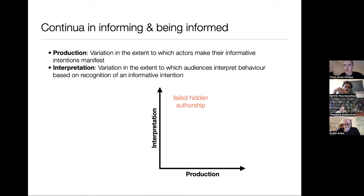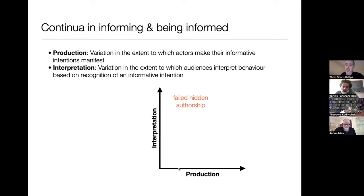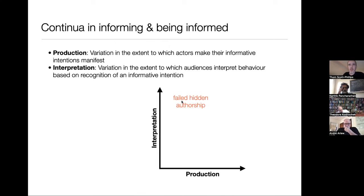Cases of failed hidden authorship are quite different. Here I've tried not to make my informative intention manifest, but I've failed — it's a little bit manifest. And as an audience, you've spotted that I was trying to hide that I had an informative intention — that I was just trying to manipulate you. That recognition may now very strongly contribute to your interpretation of my behavior. It's not simply that you spotted I was putting a wine glass in the middle of the table to inform you that I'd finished my wine — you spotted that I was trying to hide that fact from you.